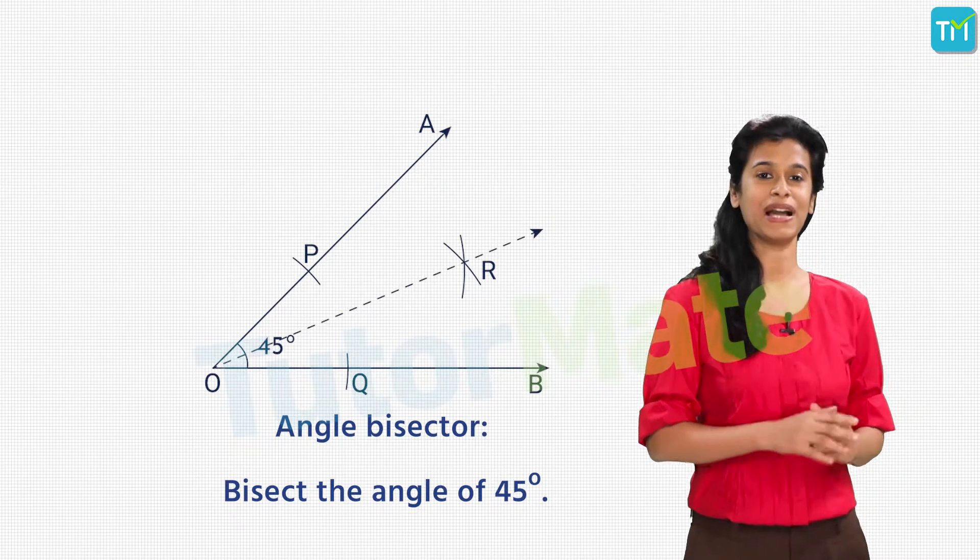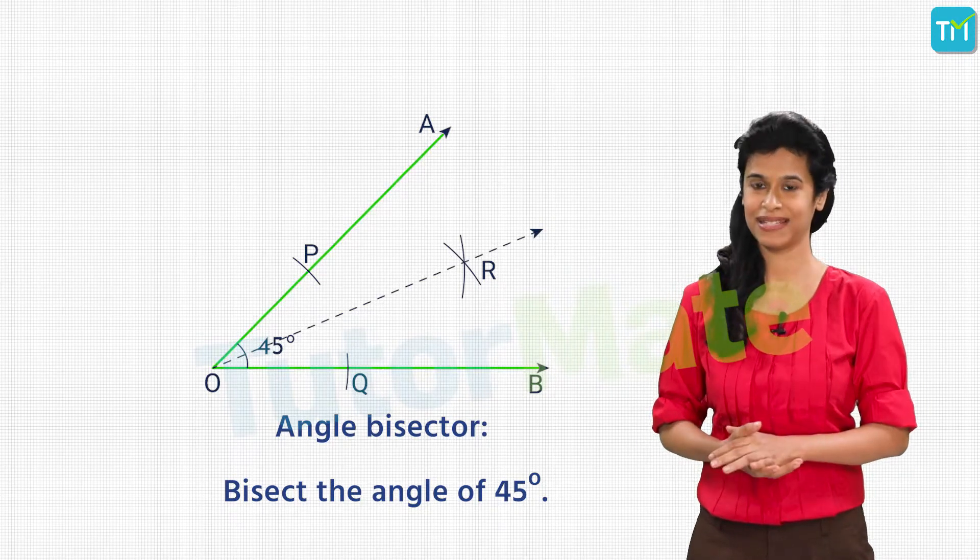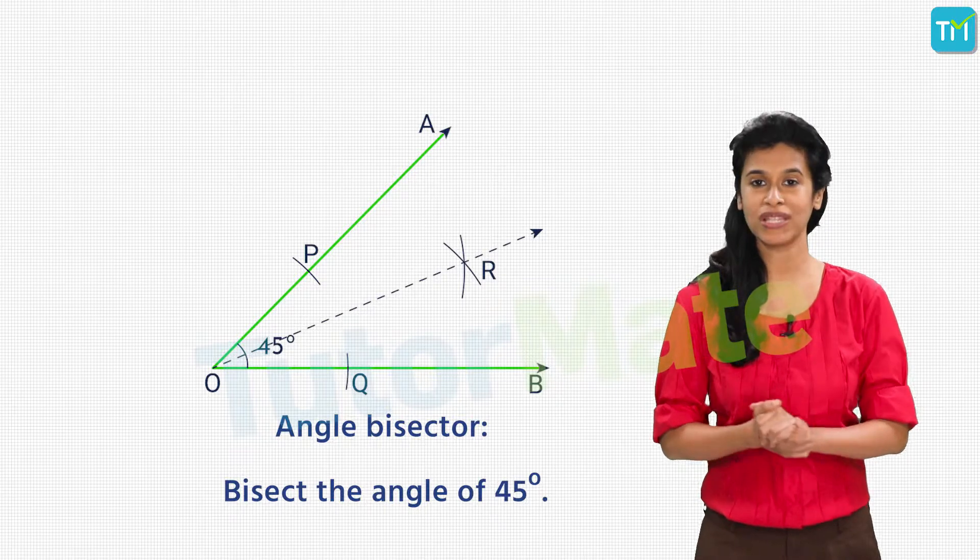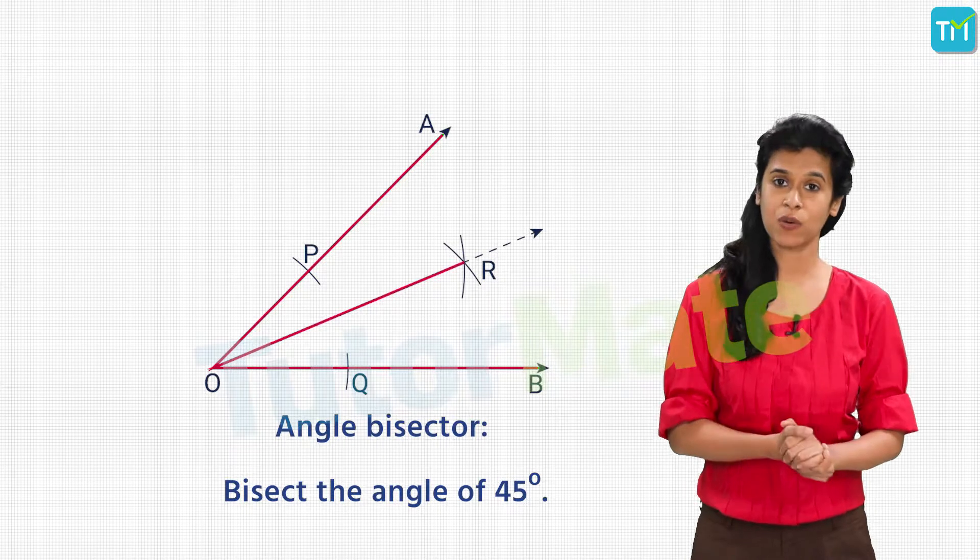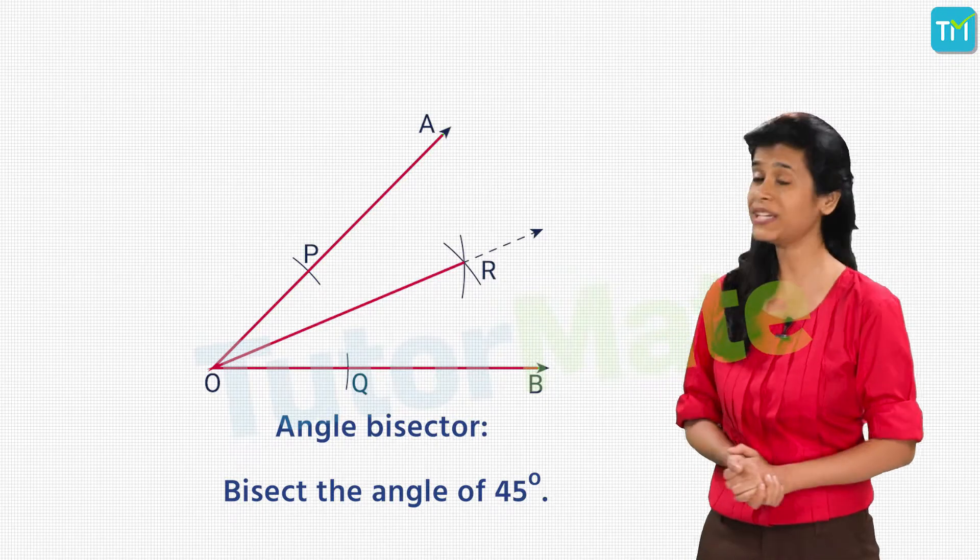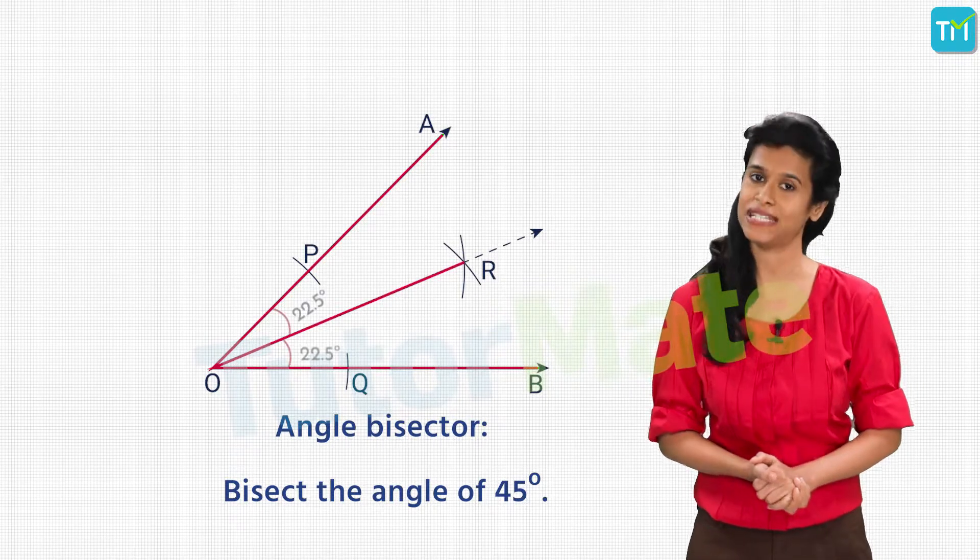The line OR will bisect angle AOB. Verify it by measuring both the angles AOR and BOR. You will see that AOR and BOR measure 22 and a half degrees each.